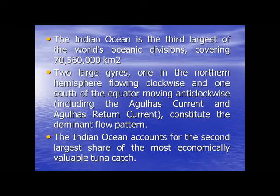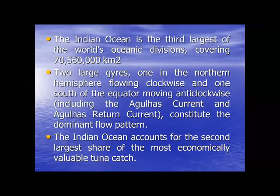Water flow in the ocean depends on rain, wave and tide. The Agulhas Current and Agulhas Return Current determine the water flow in Indian Ocean. Indian Ocean accounts for the second largest share in tuna fisheries, after Pacific Ocean.